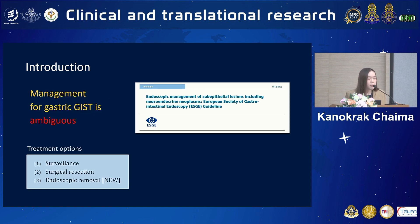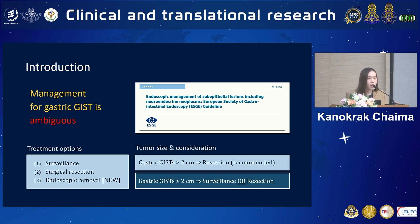The problem is that the management for the lesions is still ambiguous in the current ESGE guidelines, where the treatment options include: first, surveillance; second, surgical resection; and third, endoscopic removal options, which have just recently become available. Tumor size plays an important role in choosing treatment, where gastric GIST more than 2 cm are recommended for resection, but for gastric GIST less than or equal to 2 cm, surveillance or resection are still controversial and both are acceptable alternatives.